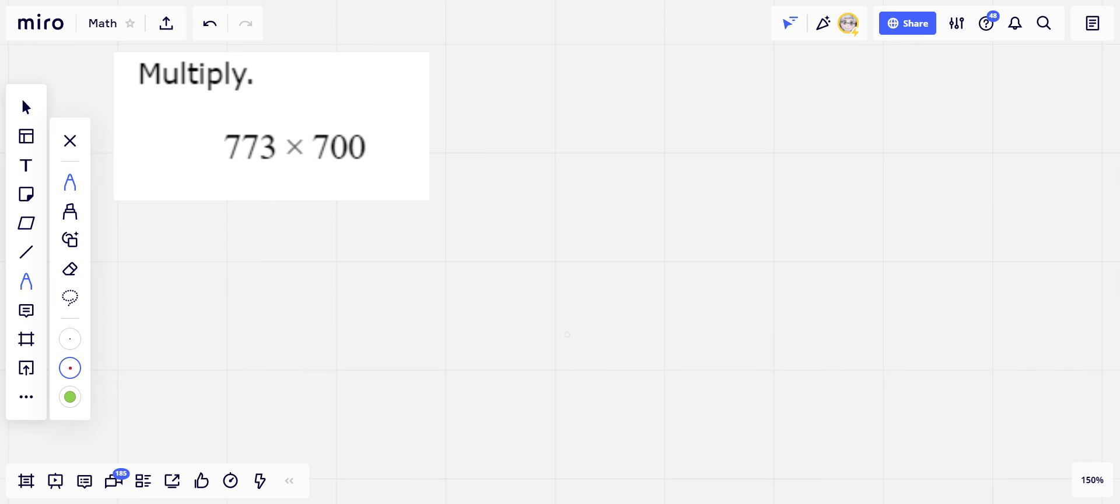Look at this. We've got two trailing zeros. So we're going to set this up in the same way. We're going to put this number on the bottom. So 773 times 700. And we can go ahead and write both trailing zeros down and then forget about them.